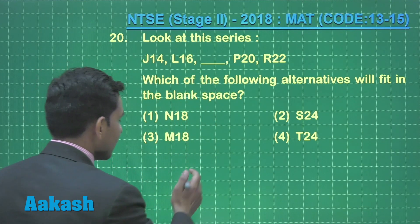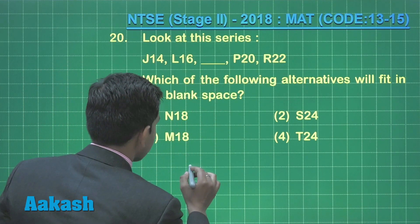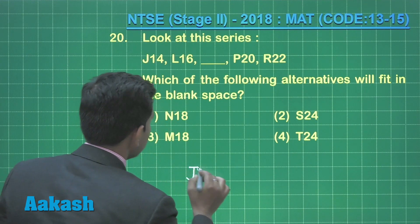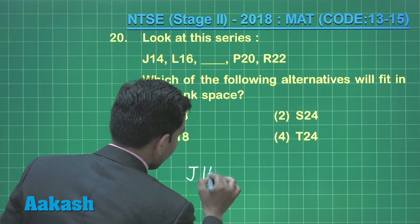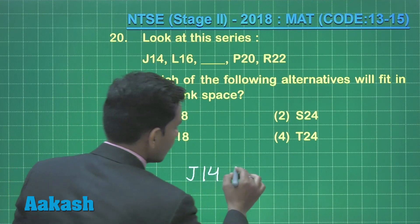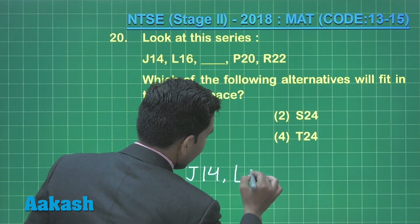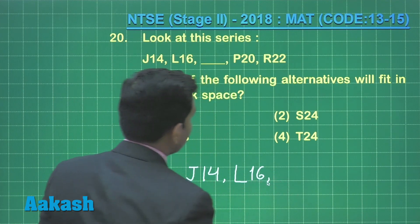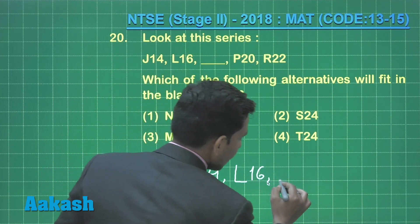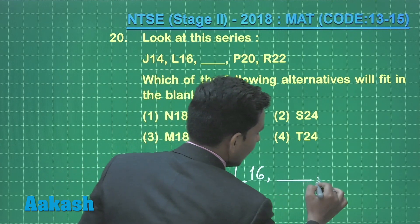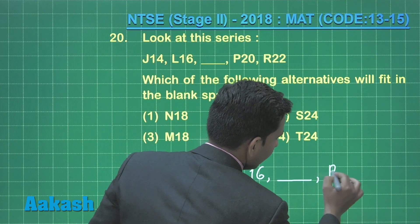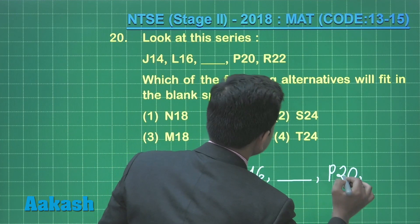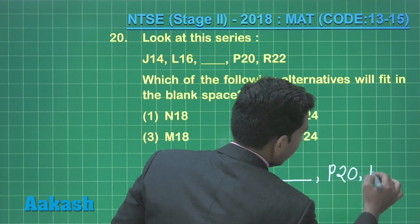The given terms of the sequence are: j14 as the first term, then l16, then the third term is missing. Then we have p20, and the next term is r22.